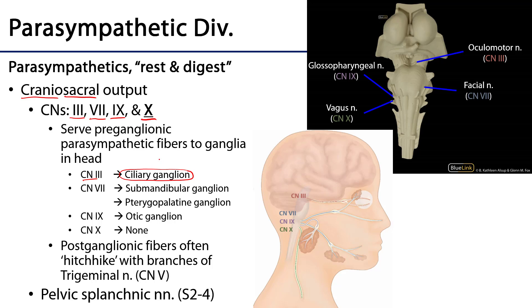Cranial nerve 7 serves two different ganglia. There's the submandibular ganglion, which serves the submandibular and sublingual salivary glands. It also serves the pterygopalatine ganglion, which is going to serve the lacrimal gland to produce tears, and also the mucosa of the nasal cavity and paranasal sinuses.